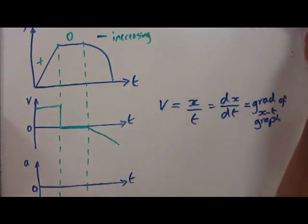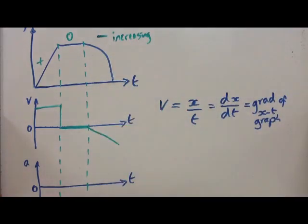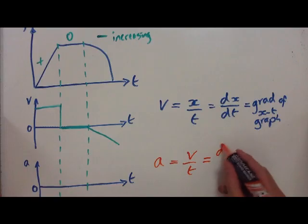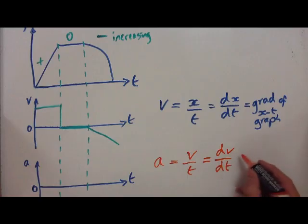Right, how do I now convert this velocity-time profile, so this velocity-time graph, into acceleration-time? Well, I know now that acceleration is actually equal to velocity divided by time.